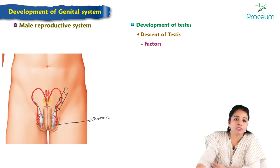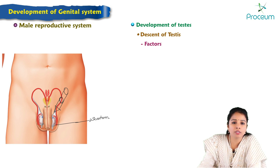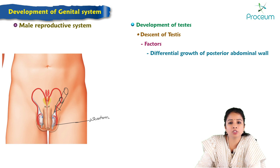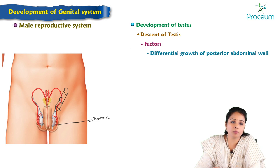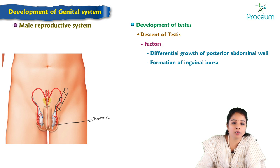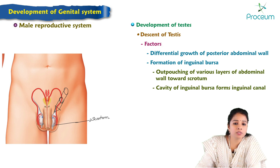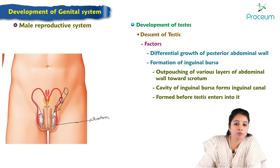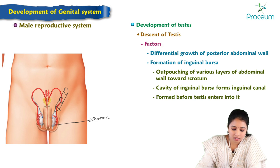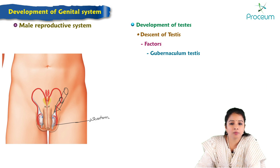The factors responsible for the descent of the testis include: first, differential growth of the posterior abdominal wall; second, formation of the inguinal bursa and outpushing of the various layers of the abdominal wall toward the scrotum — the cavity of the inguinal bursa forms the inguinal canal, and the inguinal bursa is formed before the testis enters it; and third, the gubernaculum testis.